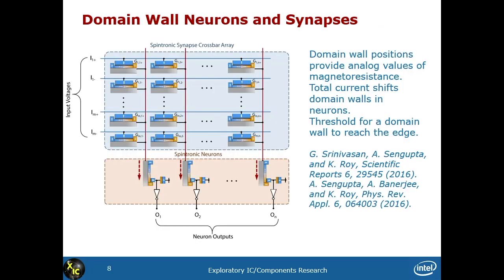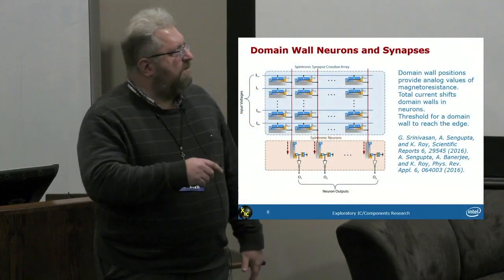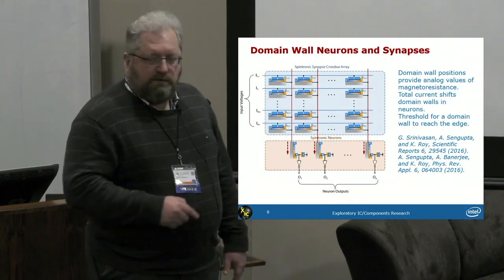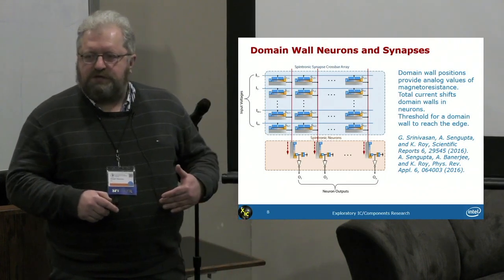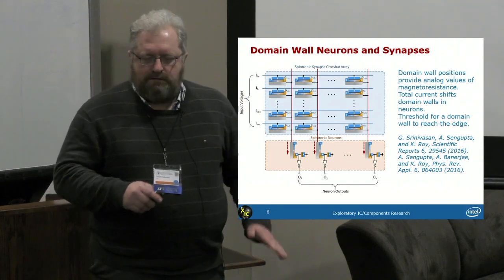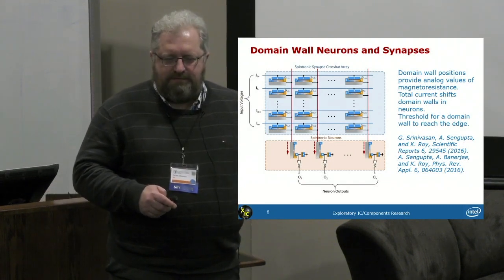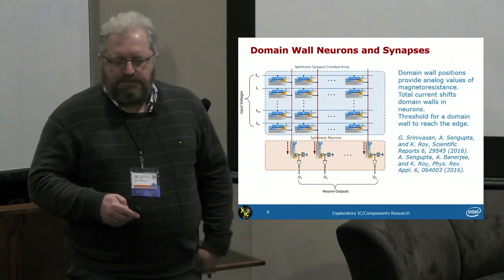That's not the only possible way. The group of Professor Roy at Purdue proposed a crossbar array based on nanomagnetic devices with motion of domain walls. As the domain walls move, the resistance of synapses changes. Also, as the domain walls move, the neurons perform summation of the inputs and the thresholding function. There isn't time to go into the details of its operation — just showing you the variety of possibilities.